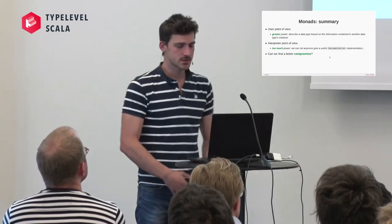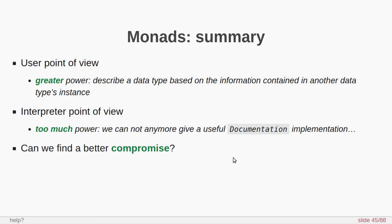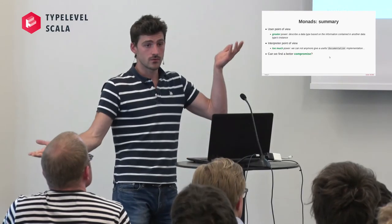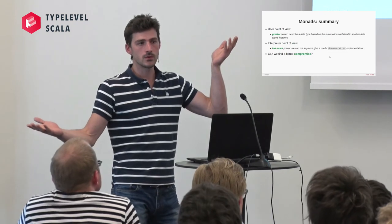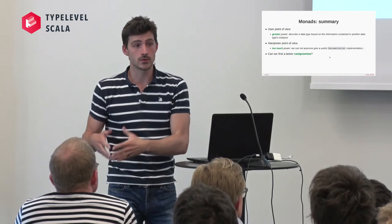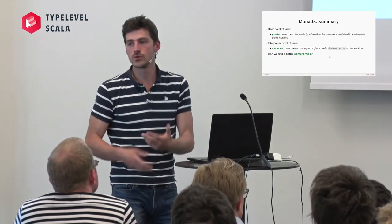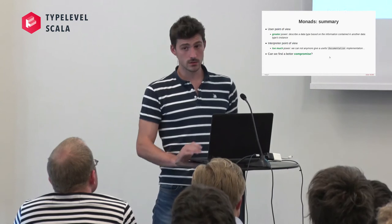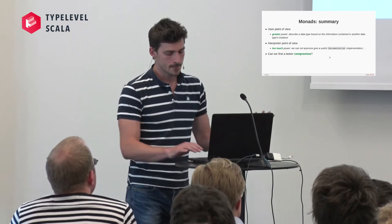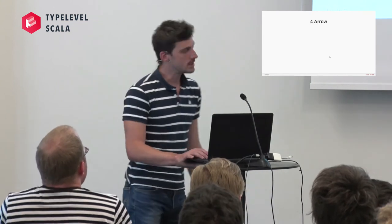We are losing information because we are not able to call the f function — we have no A value to use. So that's why information is lost. A little summary: from the user's point of view, we were happy to have the power of monads because it was possible to describe sum types. But from the interpreter's point of view, it made it impossible to implement the documentation interpreter in a useful way. The question is: is it possible to find a better trade-off? And indeed, arrows can give us that better trade-off.